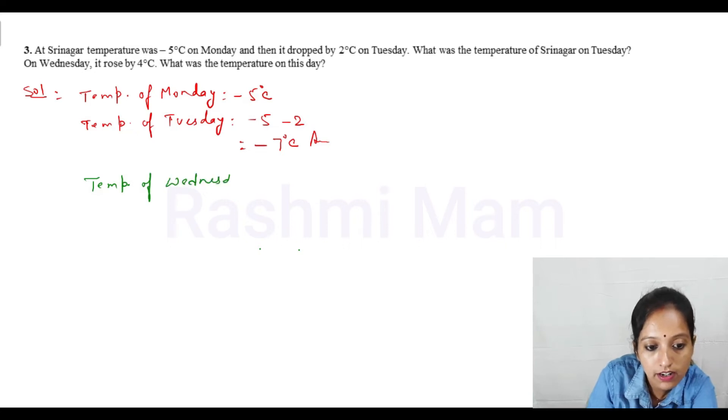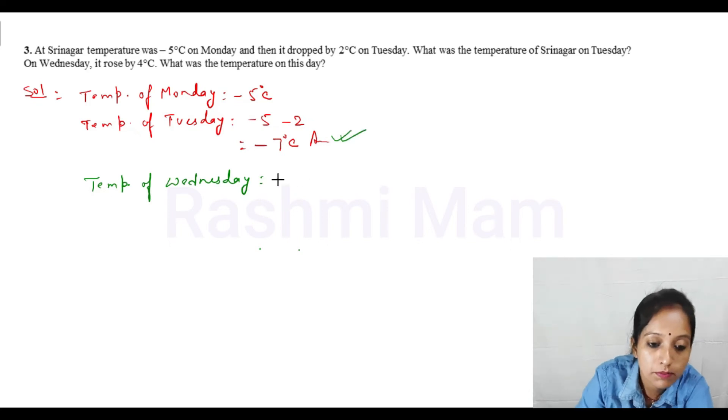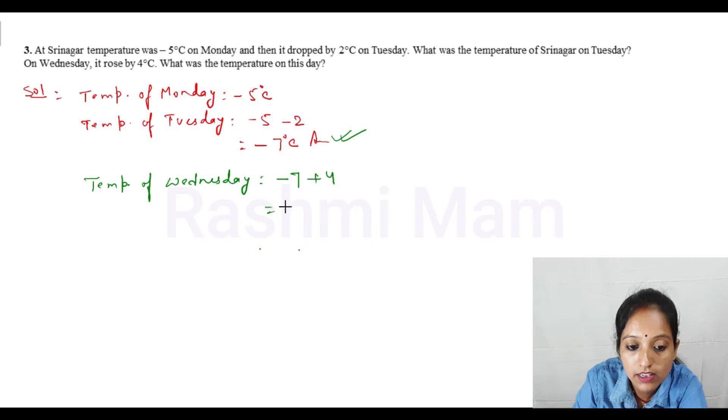Temperature of Wednesday is equal to what? On Wednesday it increased by 4 degrees C. It's rising, increasing. So we take Tuesday's temperature minus 7 degrees C plus 4 degrees C. The temperature is increasing by 4 degrees. Minus 7 plus 4 equals minus 3 degrees C.